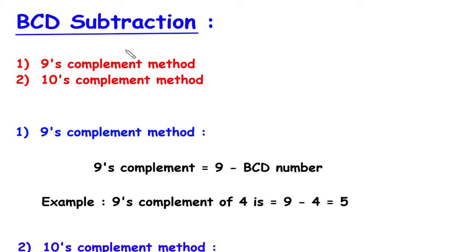BCD subtraction. BCD subtraction of two BCD numbers can be performed by either the 9s complement method or the 10s complement method.